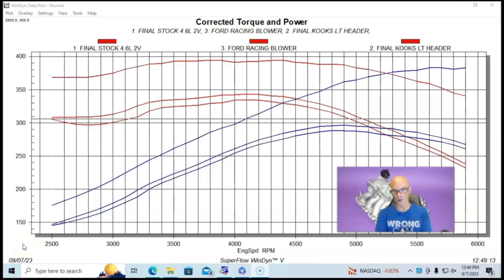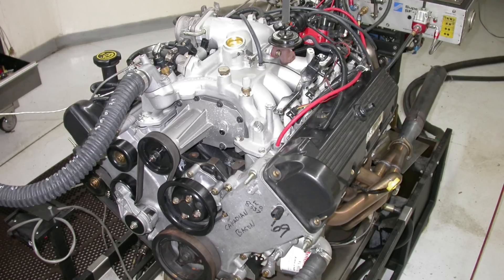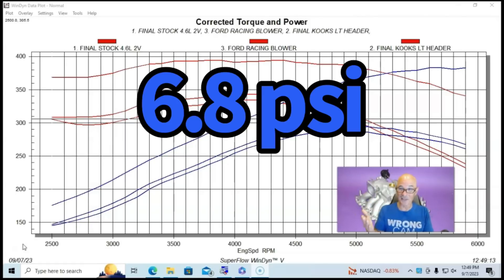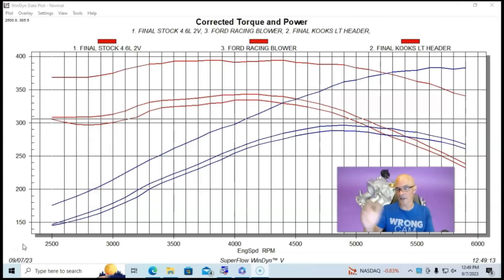Naturally, we were happy with installing the blower. And in this configuration, with the supplied pulley, the blower produced about a peak of 6.8 pounds of boost out here at near 6,000 RPM and had kind of a climbing boost curve going up. But I know what you're thinking, Richard, where's the 400 horsepower thing?